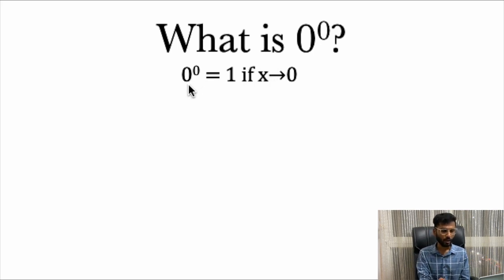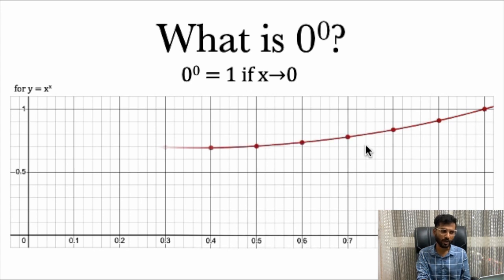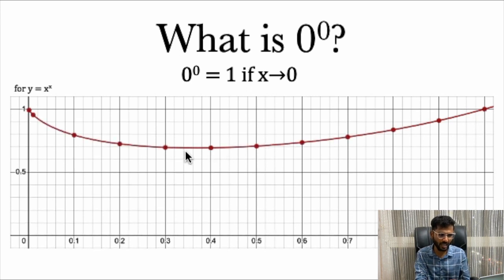If you observe, from 1 to 0.4 or maybe between 0.4 to 0.3 the values were reducing and then it was increasing. It will be very interesting to plot the graph for this. Let's plot a graph for x^x, y = x^x from 1 to 0. If you can see from 1 to 0, we have plotted it in a reverse way. The values were reducing till the point of 0.4 to 0.3 and then it was increasing till the point of 1. In the end we have found the value of 0^0 equals to 1.